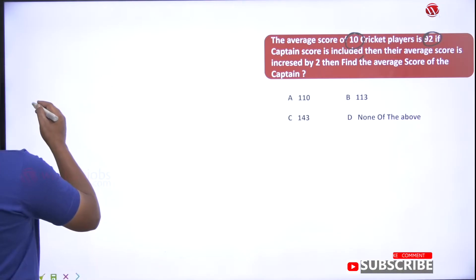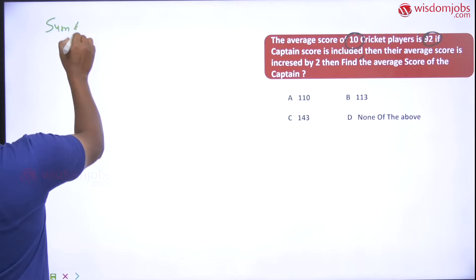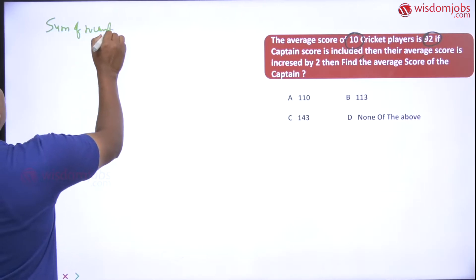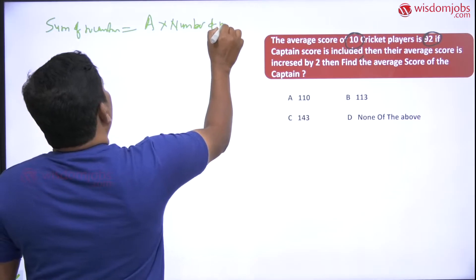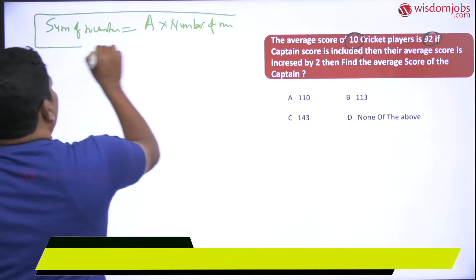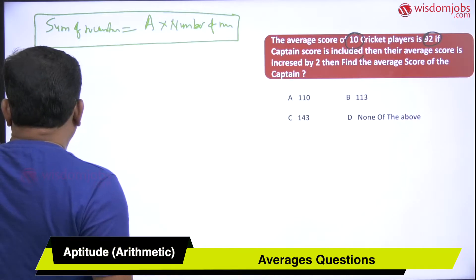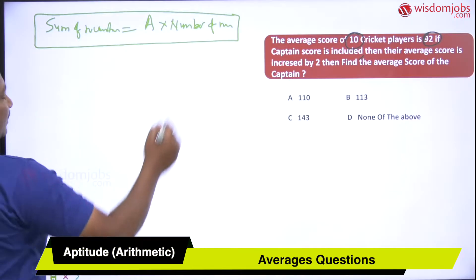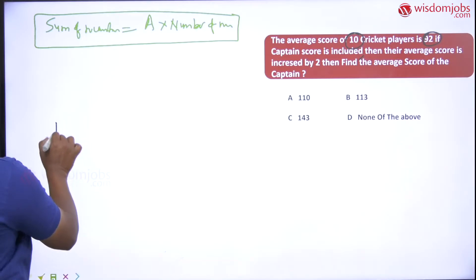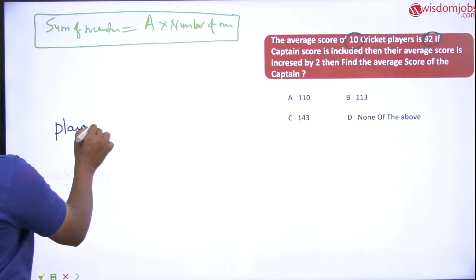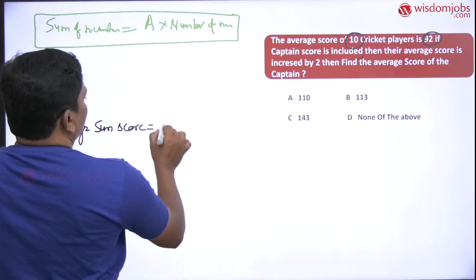We need to find the sum of the scores of the initial 10 cricket players. The formula to use here is: sum of numbers equals average multiplied by the number of members. Using this formula, we can find the total score produced by the 10 players.